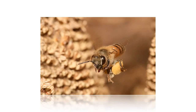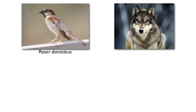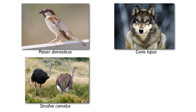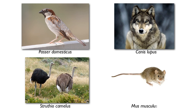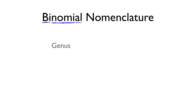So the honeybee became Apis mellifera — what a relief. The house sparrow, Passer domesticus. The gray wolf, Canis lupus. The common ostrich, Struthio camelus. And the mouse, Mus musculus. So this binomial nomenclature — bi means two and nomial means name — comes from the fact that there is going to be a genus name and a species name.